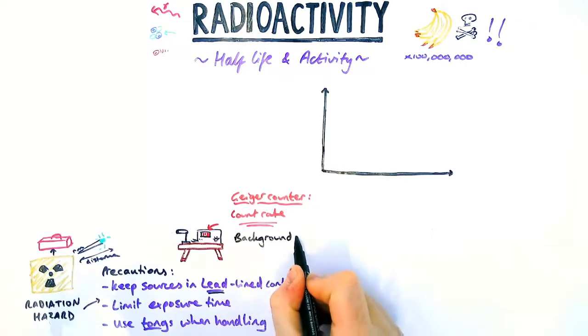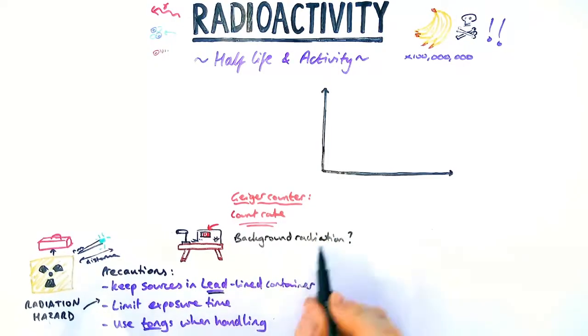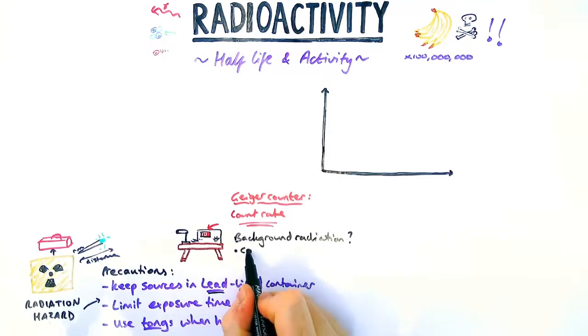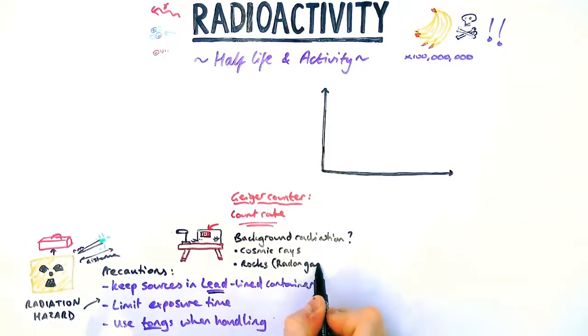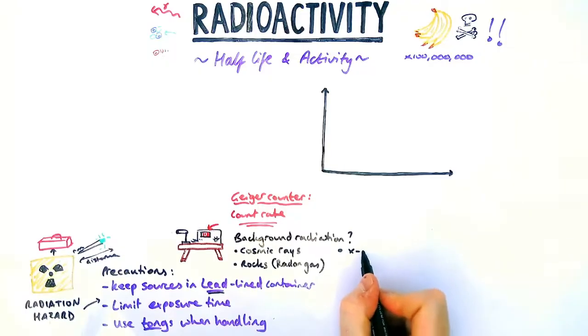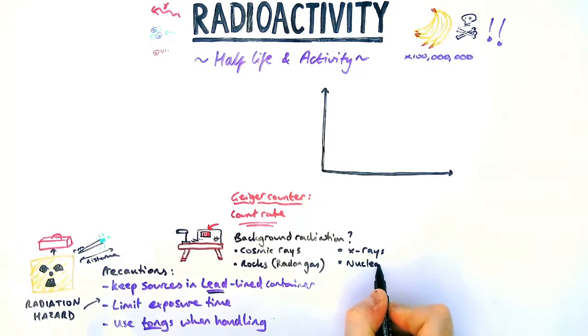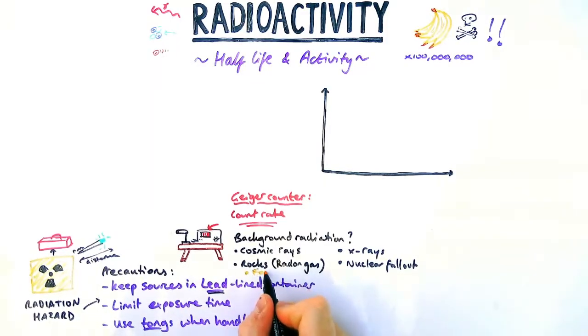The count rate could be present even if we have not got the source pointed at the Geiger counter. That's due to something called background radiation. As the name suggests, background radiation is in the background. It's going through you right now. It's cosmic rays from space, it could be from rocks producing radon gas in the ground, it could be from x-rays in nearby hospital, it could be nuclear fallout from the 60s and 70s nuclear weapons testing, and it could be from food and drink like our bananas from earlier.